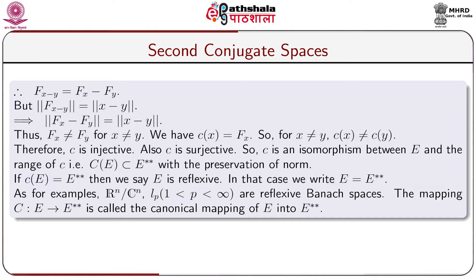Because if we consider the normed linear space ℝⁿ, we have seen in module 1 that its first conjugate space or first dual is also ℝⁿ. If we take another dual of ℝⁿ, we again see the second dual is also ℝⁿ. So ℝⁿ = (ℝⁿ)**. Similarly, if we take all n-tuples over the field of complex numbers, the first conjugate space of ℂⁿ is also ℂⁿ, and the second conjugate space of ℂⁿ is also ℂⁿ.